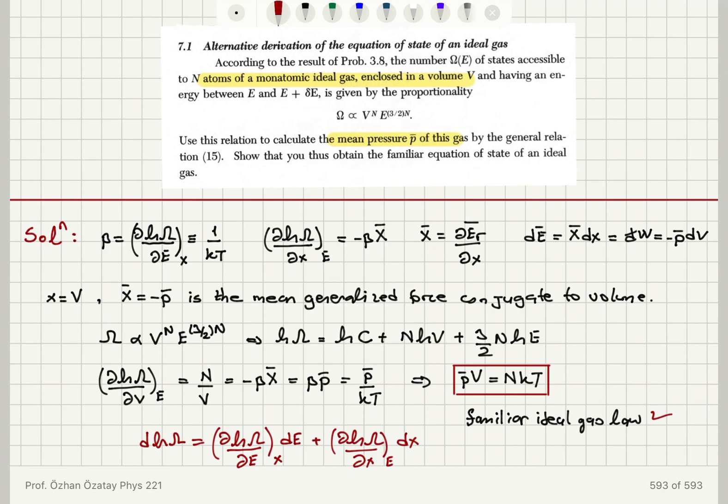plus del ln omega del x at constant energy multiplied with dx. So, we are using this expression. We have to keep either the energy constant or the external parameter constant.